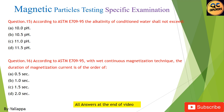Question 16: According to ASTM E709-95, with the wet continuous magnetization technique, the duration of magnetization current is of the order of: (A) 0.5 seconds; (B) 1 second; (C) 1.5 seconds; (D) 2.0 seconds.